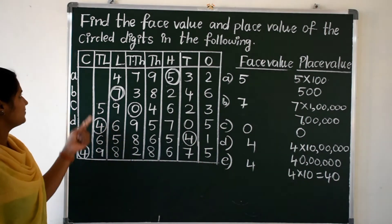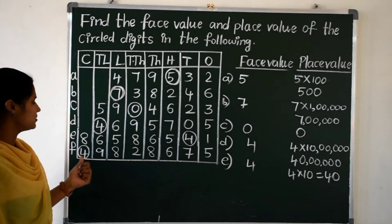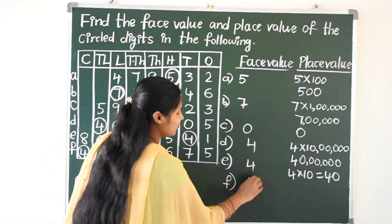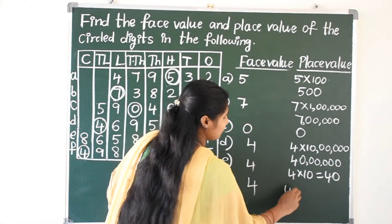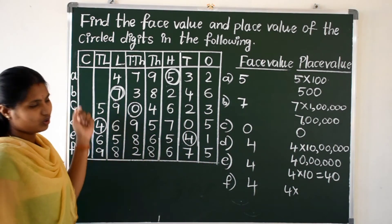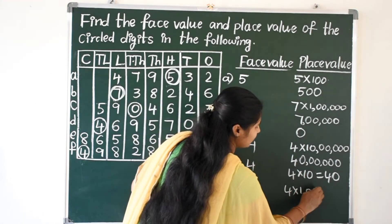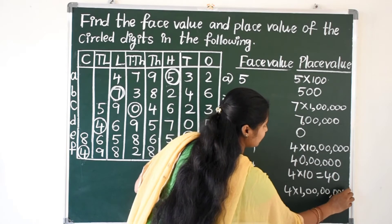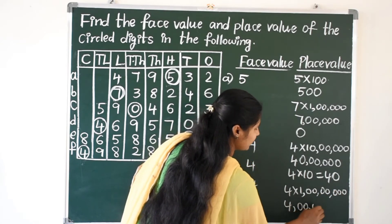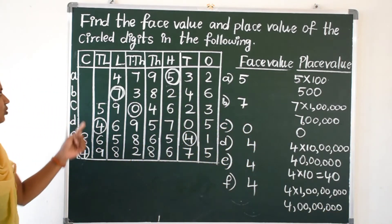Here, four is in the crores place. The face value of four is four. The place value of four — four is in the crores place, so multiply with one crore. Four into one crore gives four crores. The place value of four is four crores.